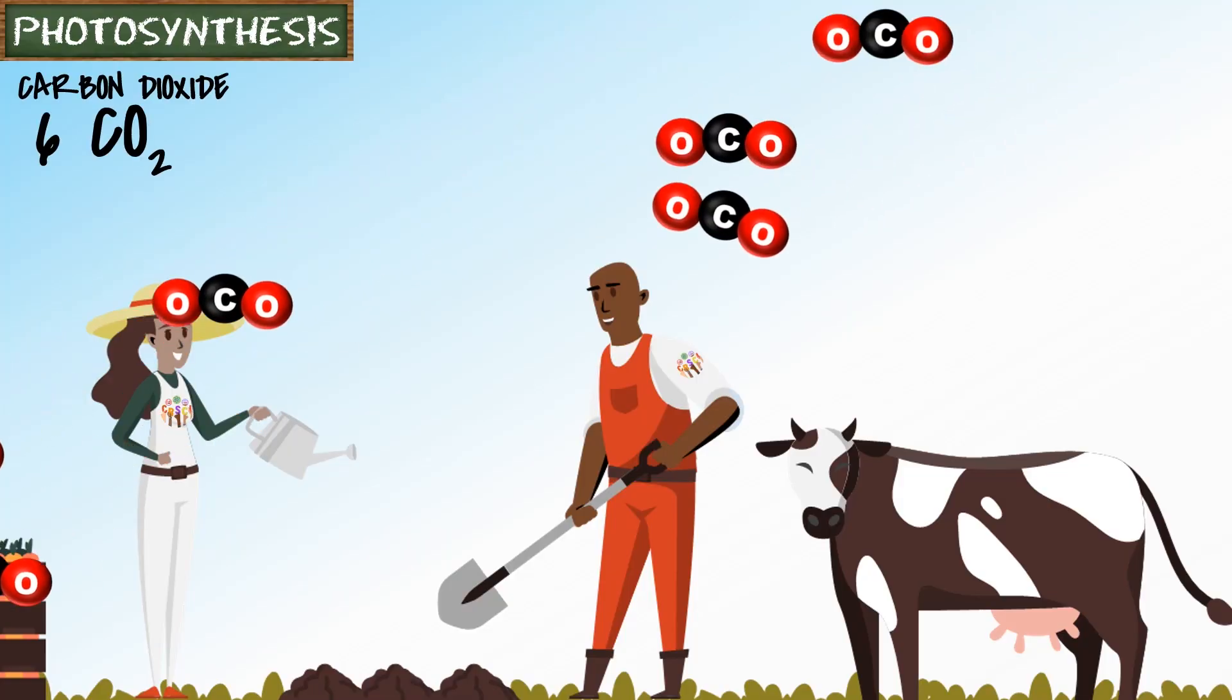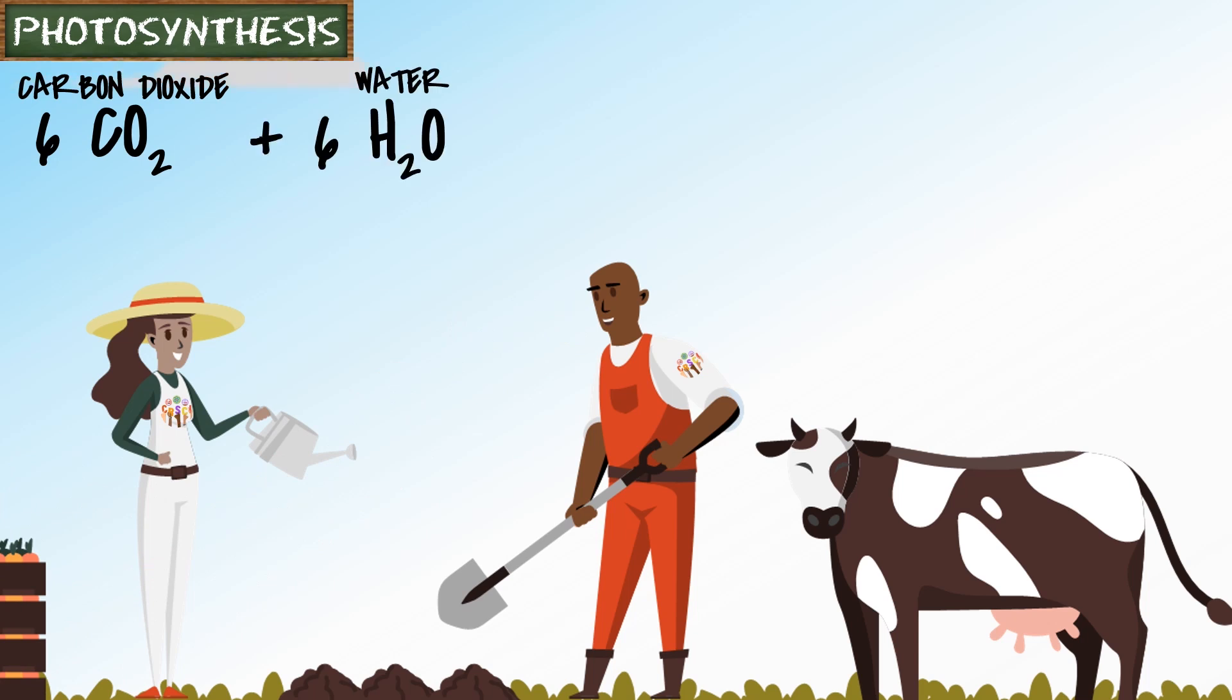Plants take in carbon dioxide and water and they use sunlight as the energy to react and produce glucose and oxygen.